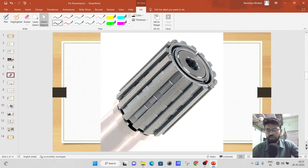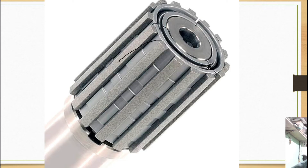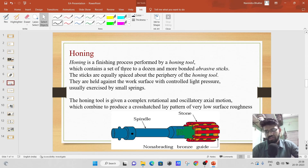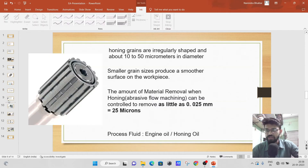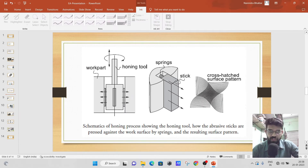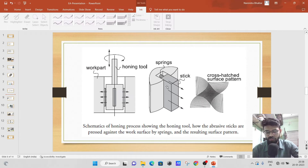The honing tool looks like this — this is the honing stone, and behind the honing stone there is a spring. Honing is a finishing process performed by the honing tool, which contains a set of three or two dozen or more bonded abrasive sticks. The abrasive sticks are equally spaced about the periphery of the honing tool and are held against the work surface with controlled light pressure. The spring exerts a continuous force, and this particular honing tool is rotating as well as reciprocating.